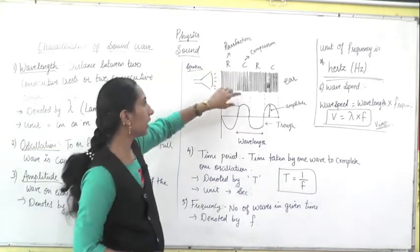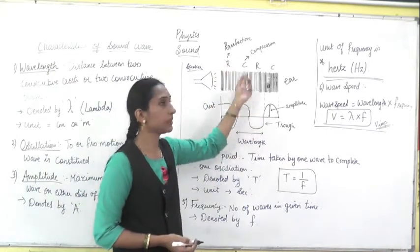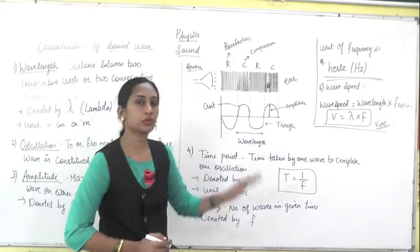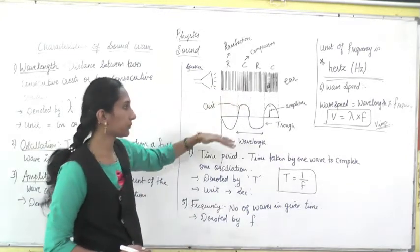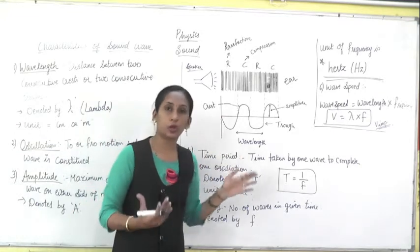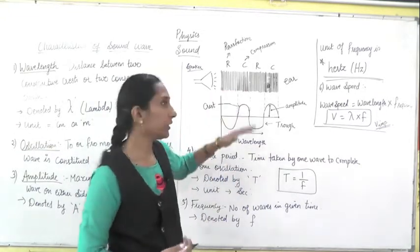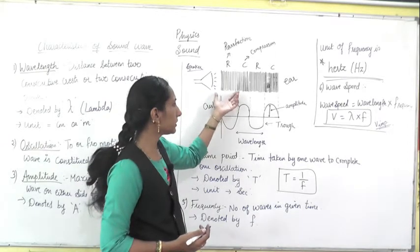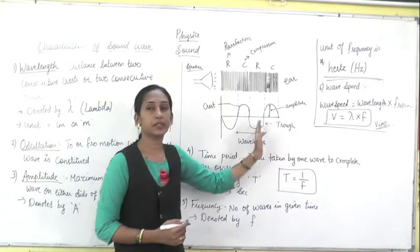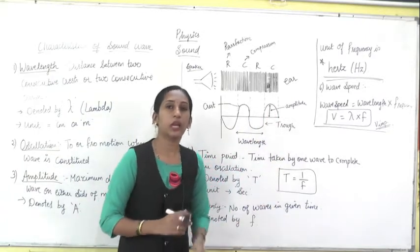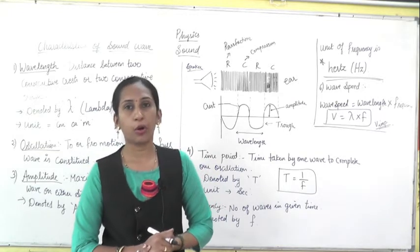So less density means rarefaction, and high density means compression. Now we are going to draw a graph — we are going to plot this rarefaction and compression. When you plot this, the pattern you get is a wave pattern. We say that sound travels in the form of waves.